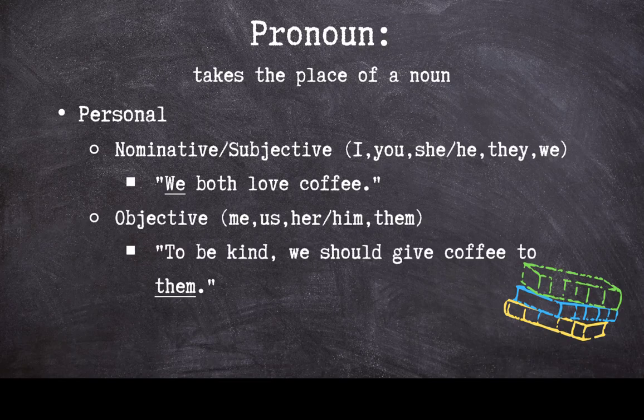Objective pronouns identify the object of a sentence — the person receiving the action of the sentence's verb. Me, us, her, him, and them are all objective pronouns. In our example sentence, 'to be kind, we should give coffee to them,' the pronoun 'them' identifies a group of people who are receiving the coffee.